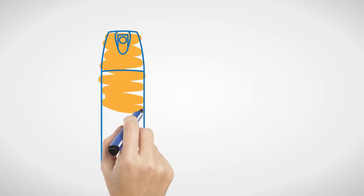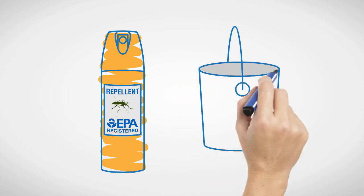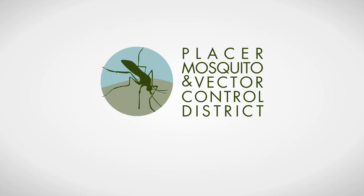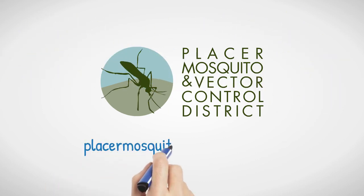Do your part by using an EPA-registered repellent, dumping and draining standing water, and contacting us, the Placer Mosquito and Vector Control District. If you need help controlling mosquitoes around your home, visit placermosquito.org for more information and to sign up for treatment updates.